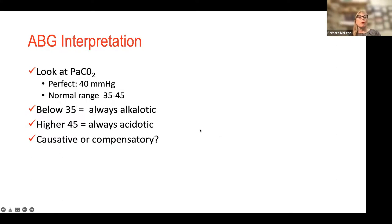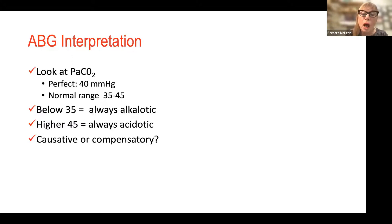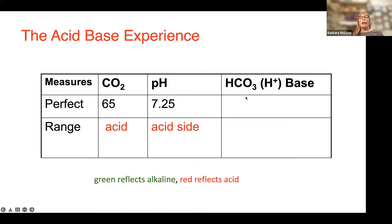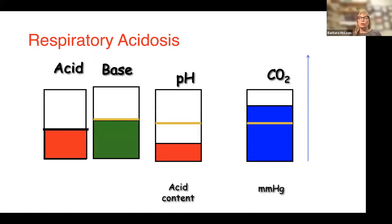Looking at PCO2: perfect is 40, range 35–45. Below 35 is always alkalotic; above 45 always acidotic. If you have a PCO2 of 50 (acidotic) and a pH of 7.34 (acidotic), you already know your problem — it's causative because more CO2 makes the pH acid. Here's CO2 at 65 — on the acid side — and pH 7.25 — also on the acid side. As CO2 goes up, pH goes down. CO2 is up, pH is down: you have respiratory acidosis.